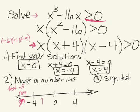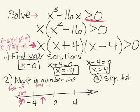Next, we test a value between -4 and 0 — I'll test x = -1. Plugging in: (-1)(-1 + 4)(-1 - 4) = (-1)(3)(-5). A negative times a negative makes a positive, so this region is positive.